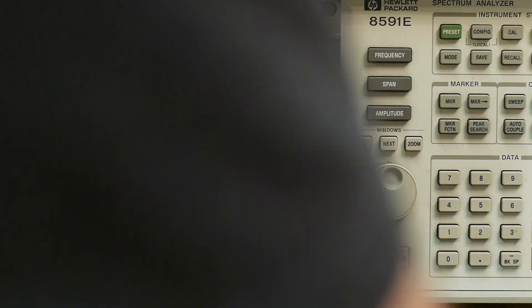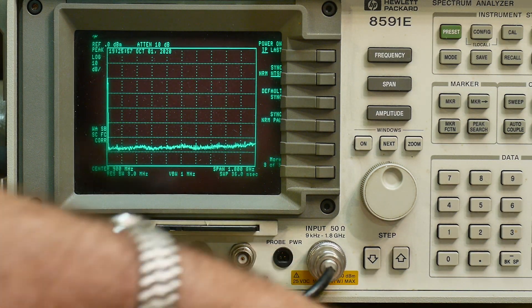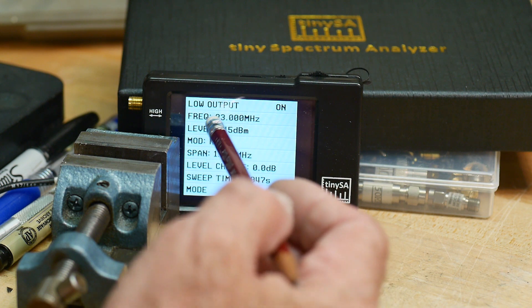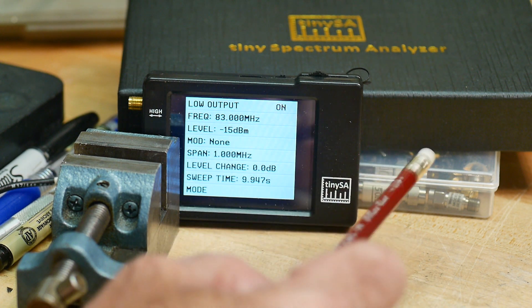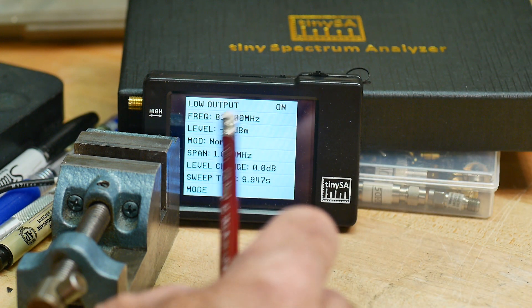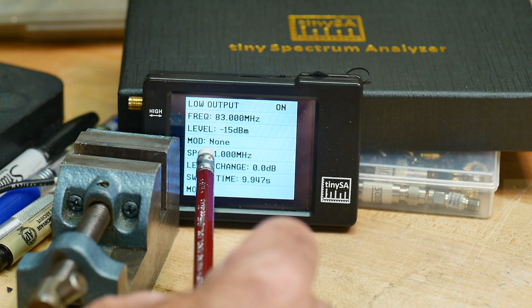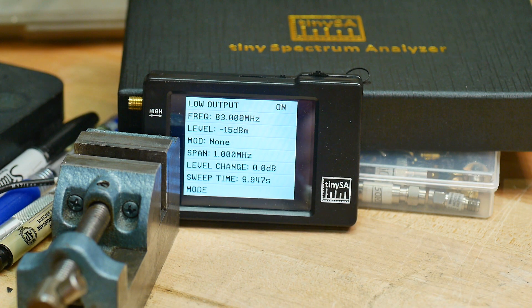I'm going to use the output mode and I'm going to set a center frequency, this time it's 83 megahertz. I have an 83 megahertz filter that I want to sweep, and I'm going to turn on sweeping. The tiny SA connected as a generator can act as a sweep generator, so it's going to output 83 megahertz at minus 15 dBm. It's not going to have any modulation and I'm going to have it sweep 1 megahertz of bandwidth and it's going to do that over 9.9 seconds, so it's going to sweep kind of slow.